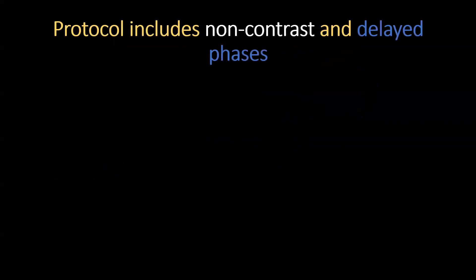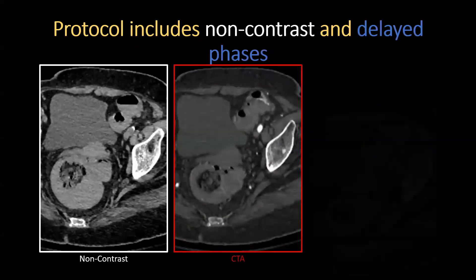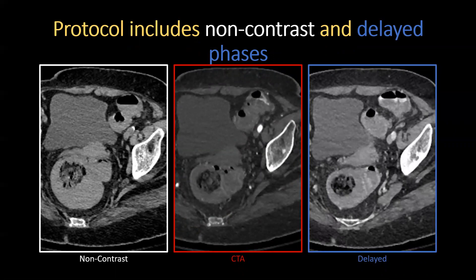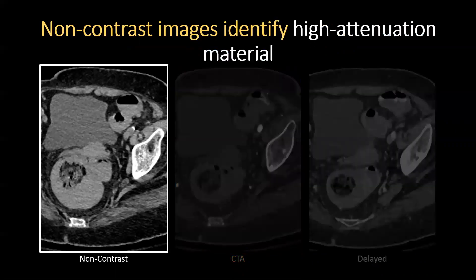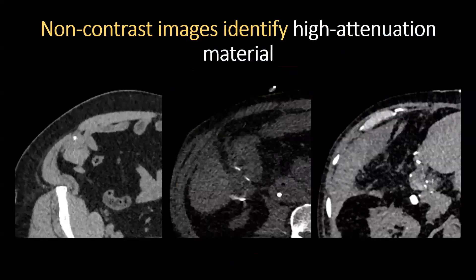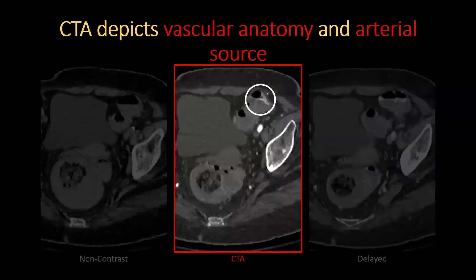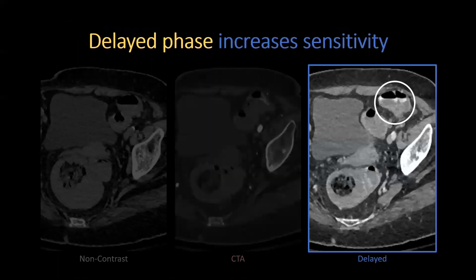First, a brief discussion on protocols — this is essential. A CTA bleeding protocol should include non-contrast, arterial, and delayed phases. The non-contrast images help identify high attenuation material, such as surgical material or calcification, that can be mistaken for extravasated contrast. The CTA images delineate vascular anatomy and identify an arterial source of bleeding if present. The delayed phase increases sensitivity for slow or subtle bleeds.